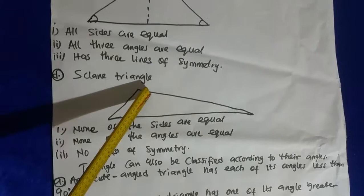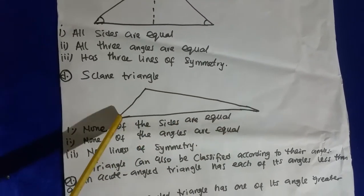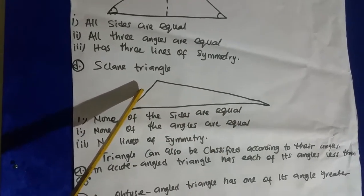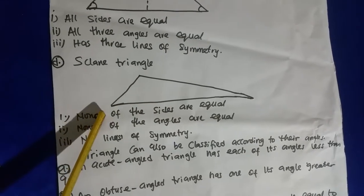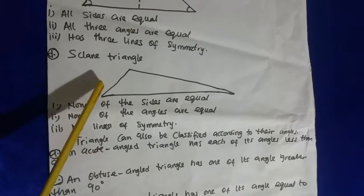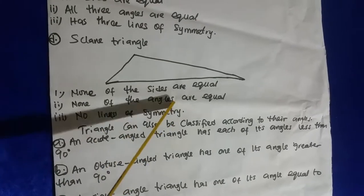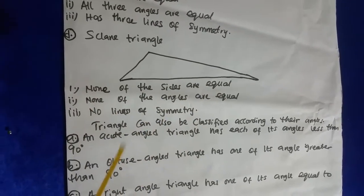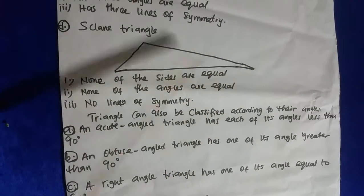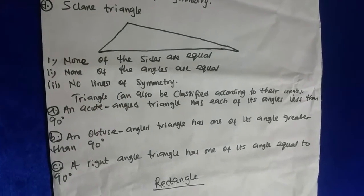This side is very long, this side is also long, and this side is short — so they don't have any equal sides. The sides are not equal; none of them is equal. None of the angles are equal — you can't measure this angle and this one and find they are the same.